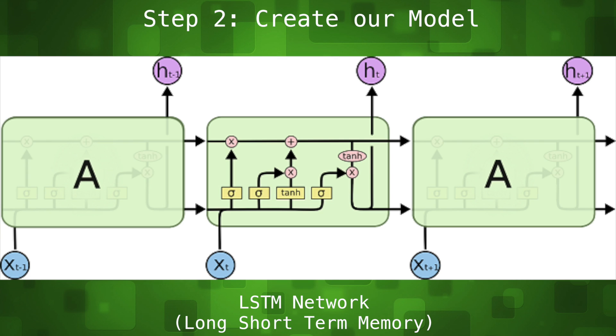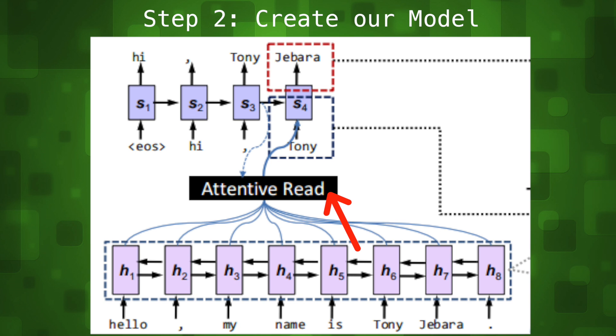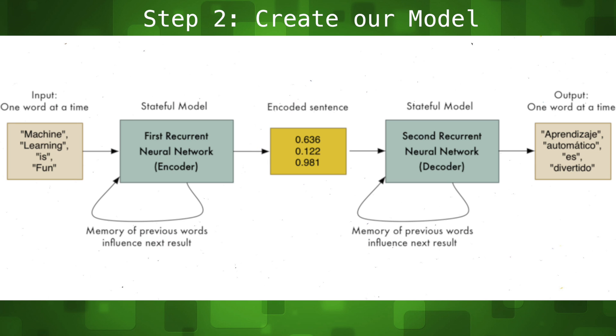The type of recurrent net we'll be using is called a long short-term memory network. This type of network can remember words from far back in the sequence and because we're dealing with large sequences our attention mechanism helps the decoder selectively look at the parts of the sequence that are most relevant for more accuracy. So our model will be able to create context vectors for existing questions and responses and it'll know to associate a certain type of question with a certain type of response.